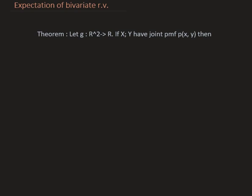Suppose G is a function which is a mapping from R² to R. If X and Y have joint PMF P(x,y), then expectation of G(X,Y) is nothing but double sum over G(x,y)P(x,y). This is the expectation.